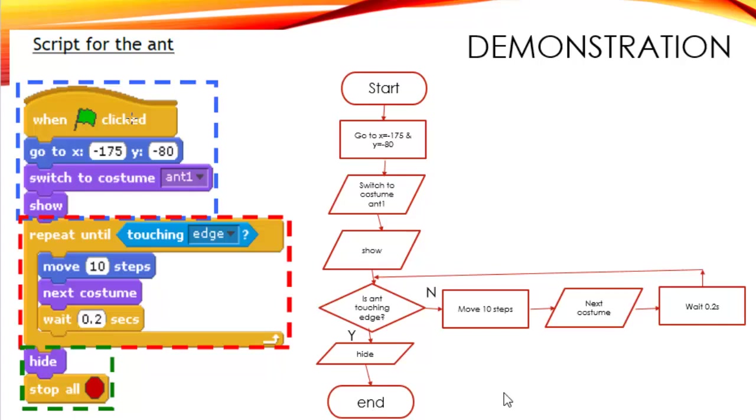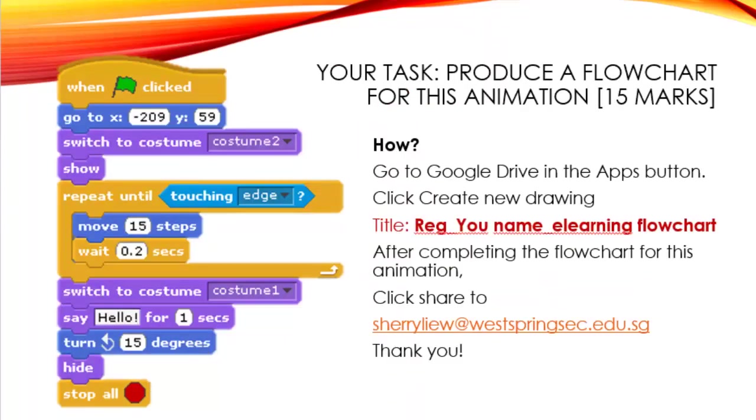That is all for the demonstration. On your own now, you have to produce a flowchart for this next animation. And it is worth 15 marks which the marks will be accounted for in your CA2.